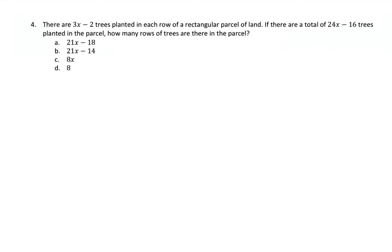So, question number 4 says, there are 3x minus 2 trees planted in each row of a rectangular parcel of land. If there are a total of 24x minus 16 trees planted in the parcel, how many rows of trees are there in the parcel?